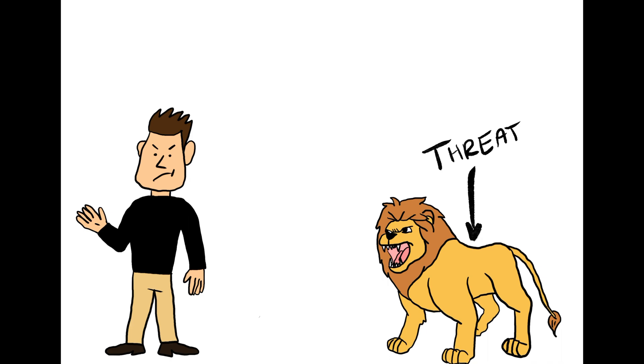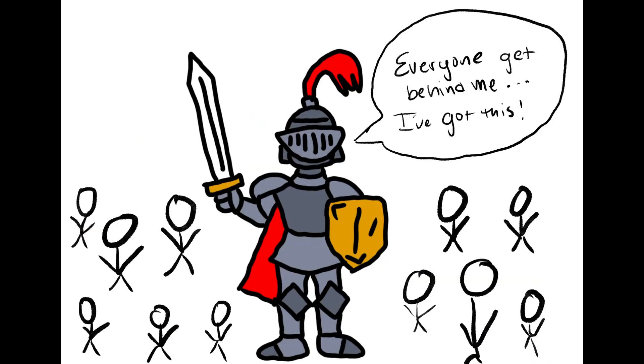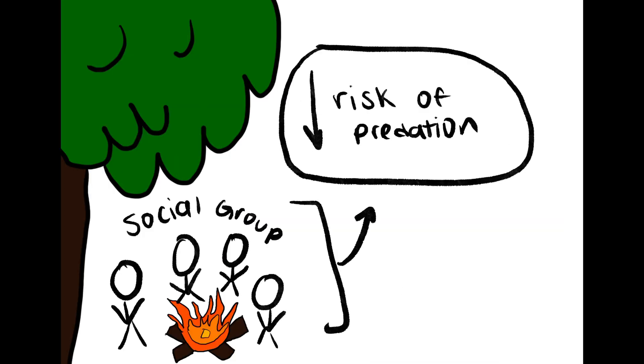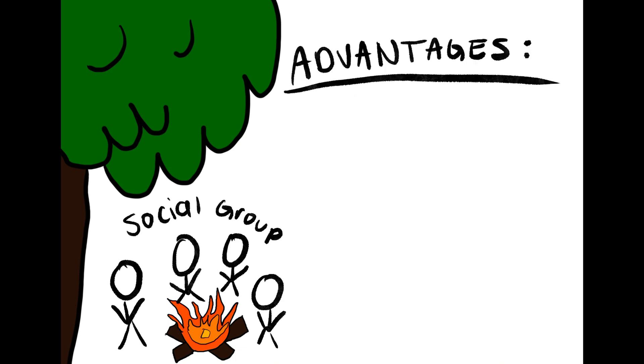Humans were not equipped with claws or razor-sharp teeth to defend themselves, so they rely on others within the social group to keep them safe. Those living in these social groups were at decreased risk of predation thanks to their pals. In addition to this, living in social groups had several cooperative group advantages, such as foraging and hunting for food.